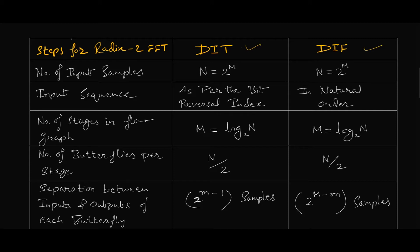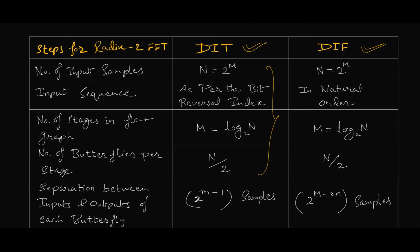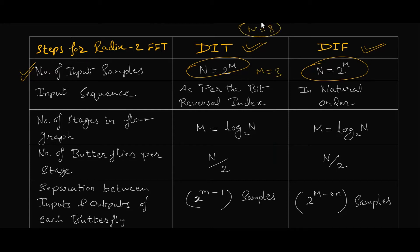Now let us see the steps involved in designing DIT and DIF algorithms. These are the same values already calculated for DIT in previous lectures, and we'll perform similarly for DIF to compare. The first step — number of input samples — is the same for both algorithms. From N, you can determine M: if N is 8, then M equals 3, which is the same for both DIT and DIF.